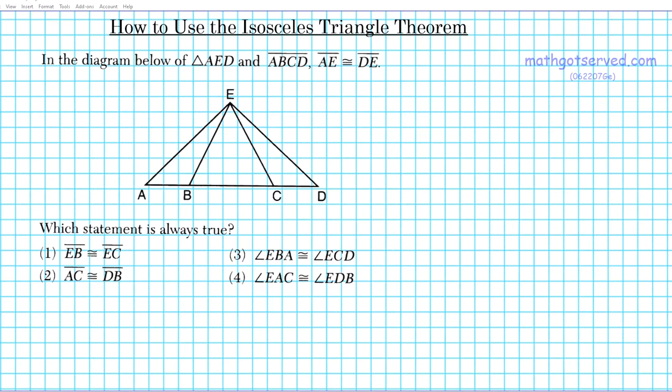The question reads: in the diagram of triangle AED below and segment ABCD, segment AE is congruent to segment DE. Which statement is always true?